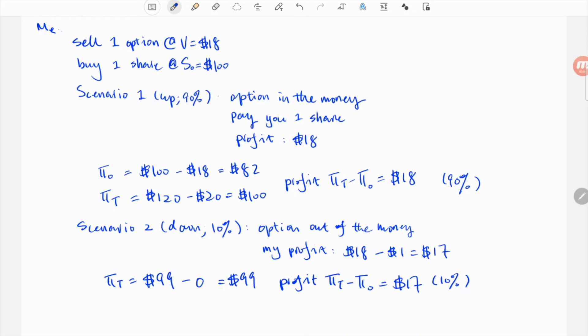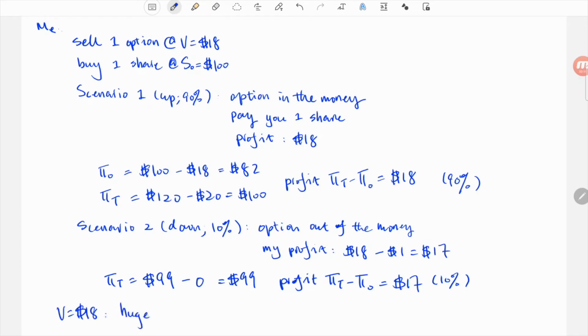Now you see with this portfolio, regardless of the ending price of the stock, I make money either way. The question is if I make $18 or $17. That's a great arbitrage opportunity for me, the seller or the writer of the option, while you on the other hand either make $2 or lose $18.